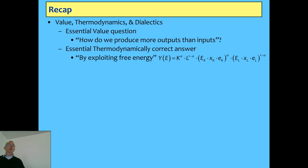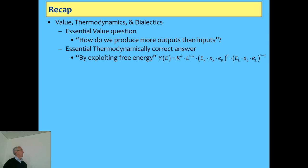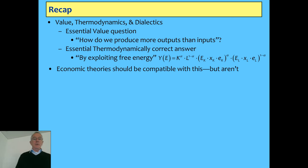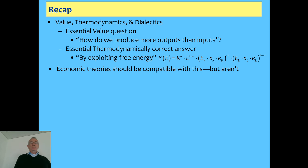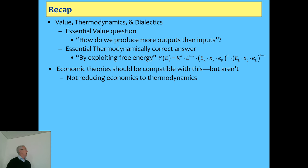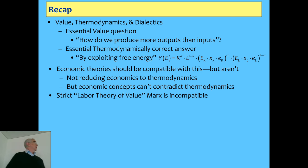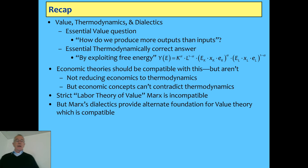If you don't have any energy input, you don't get any output. The coefficients — alpha and one minus alpha — are applied to the energy inputs as well as to labor and capital, and that's going to be pretty important today. Now, that's what we should have economic theories compatible with. That's not reducing economics to thermodynamics, but it's saying we can't contradict it. Economics was contradicting itself by ignoring the role of energy. On that basis, I'm going to argue today that the strict labor theory of value that Marx held is also incompatible with that, and I'll show you just how incompatible it is.